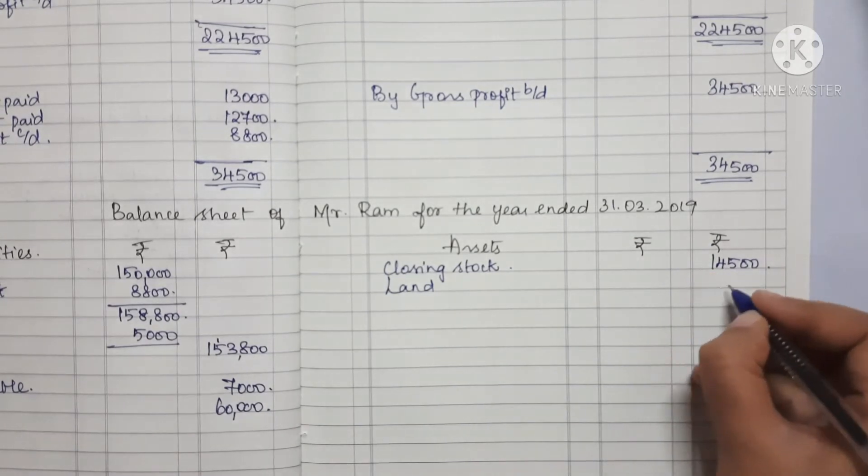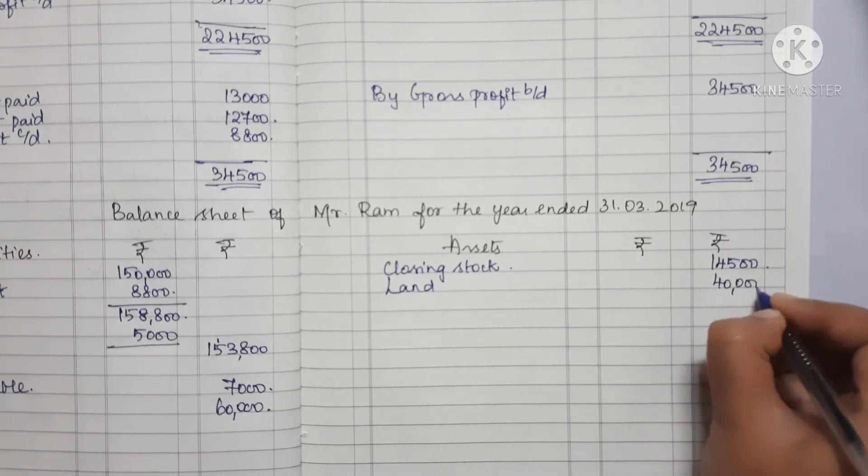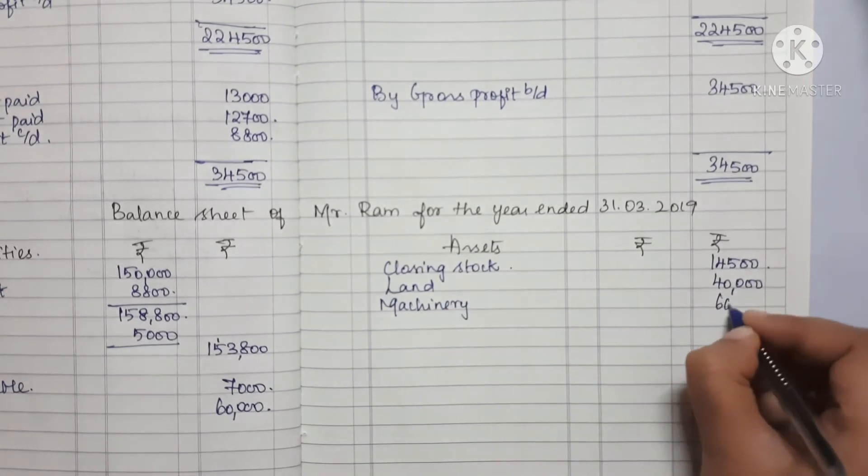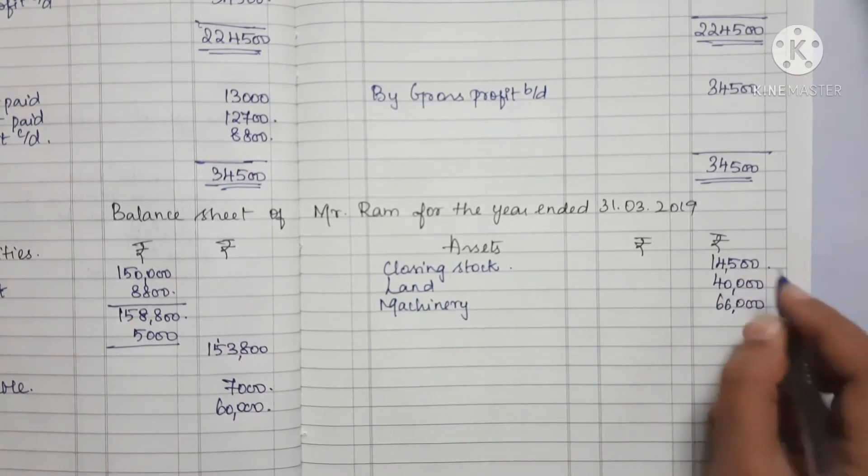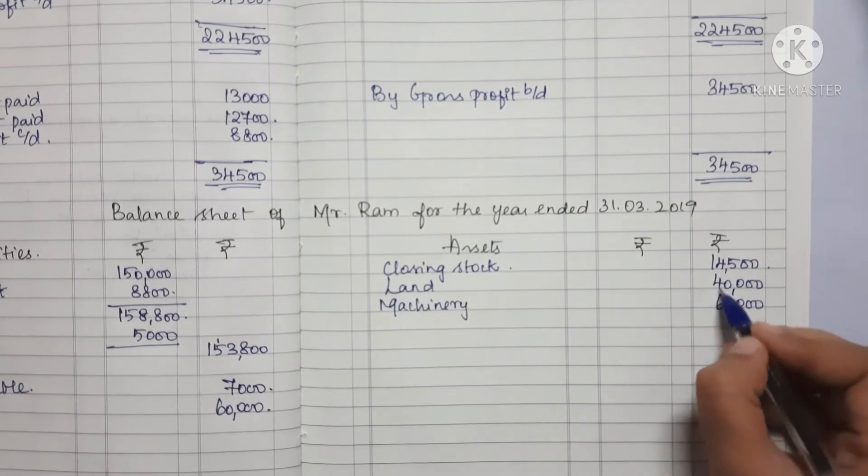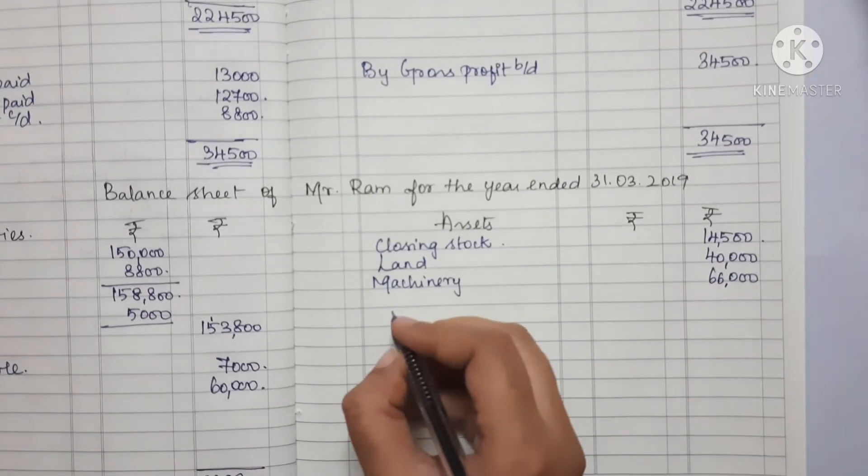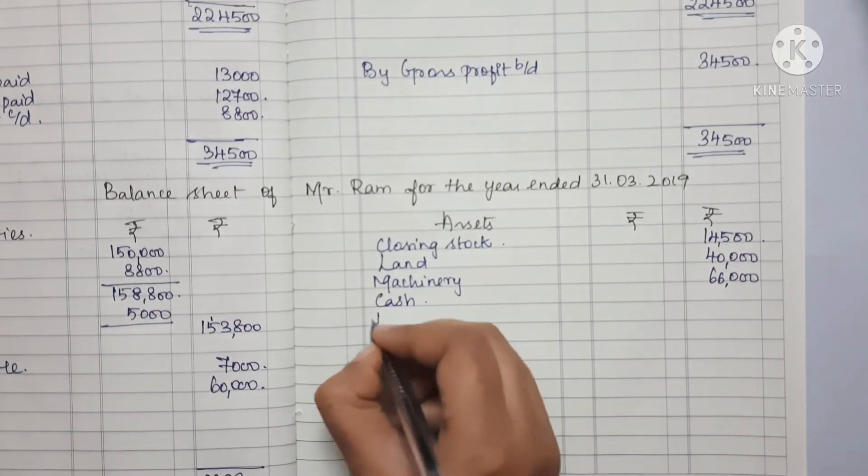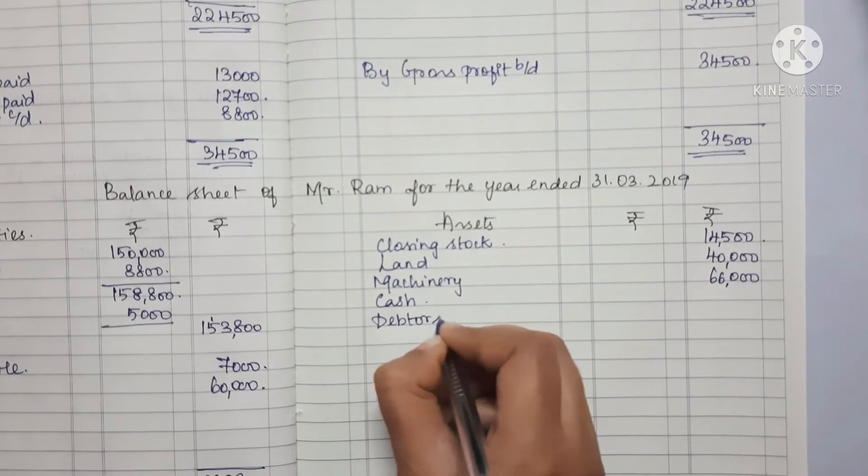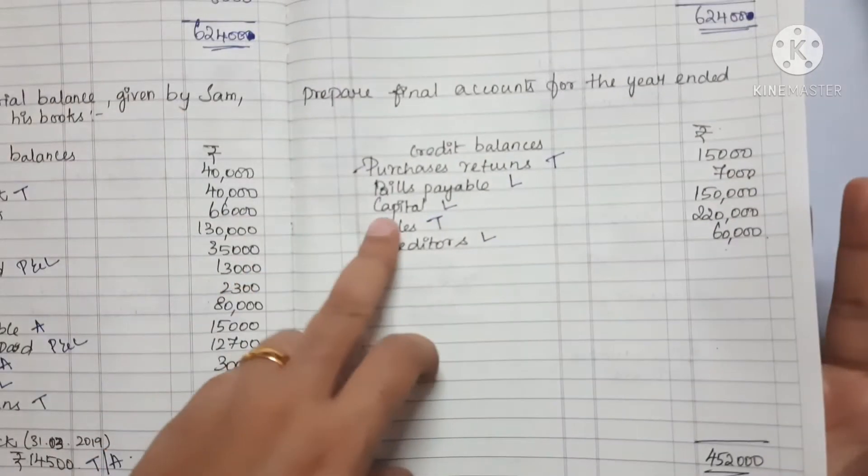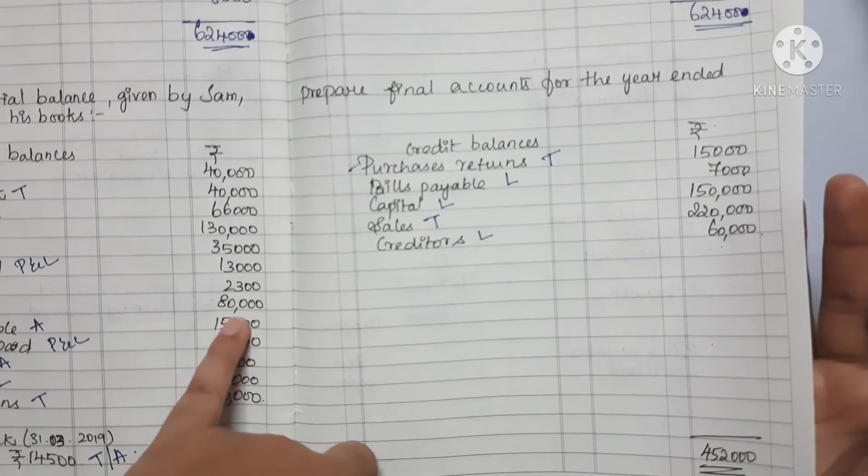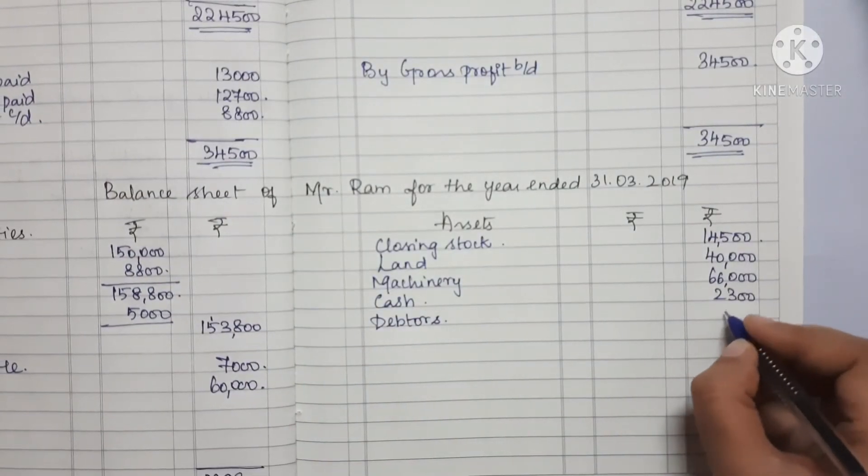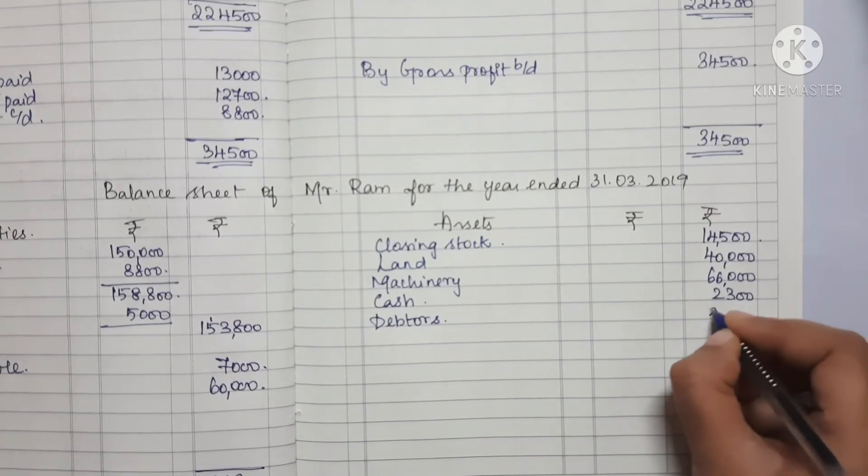Now the assets: First, Closing Stock is 14,500. Next, Land is 40,000, Machinery is 66,000. Next we have Cash which is 2,300, and Debtors which is 80,000.